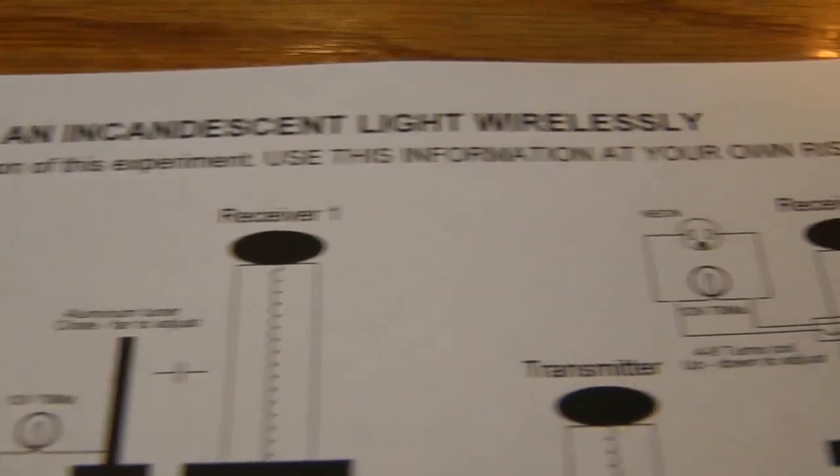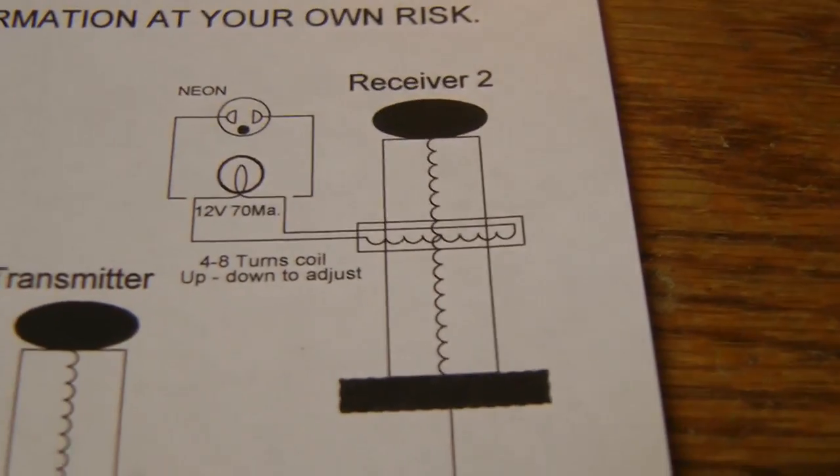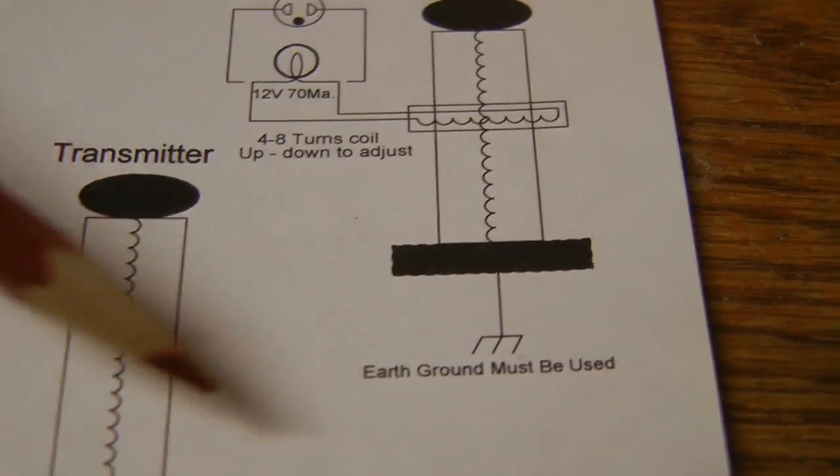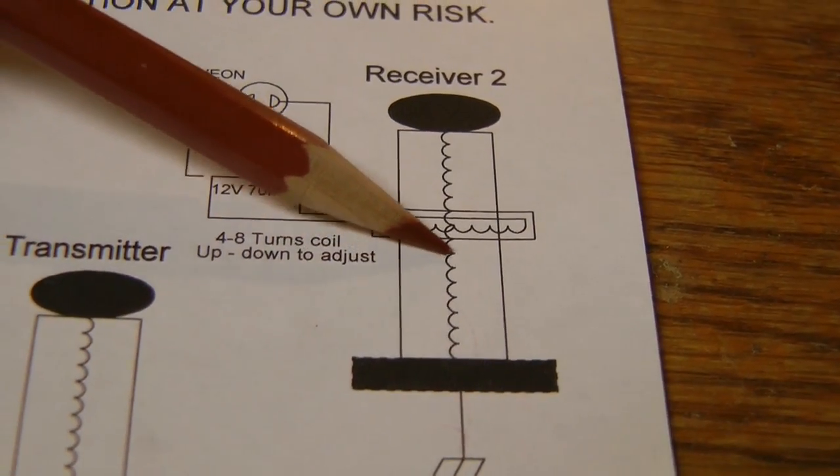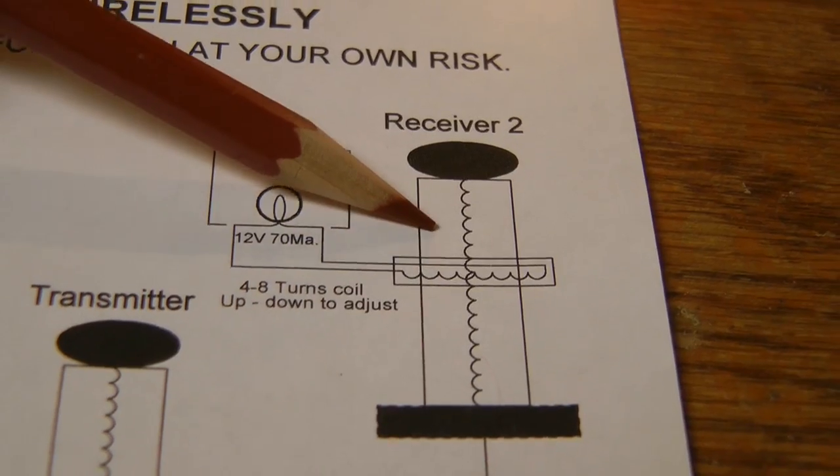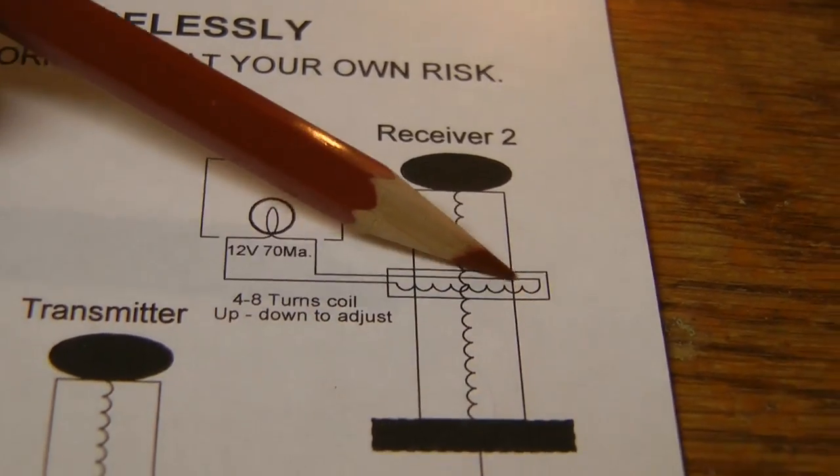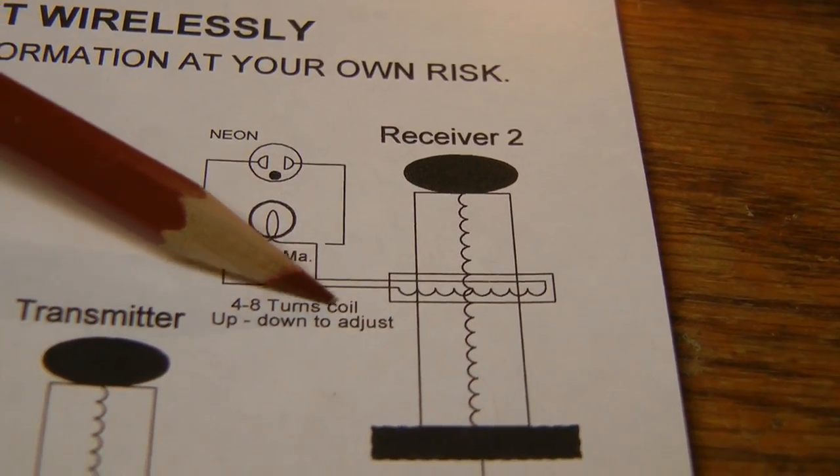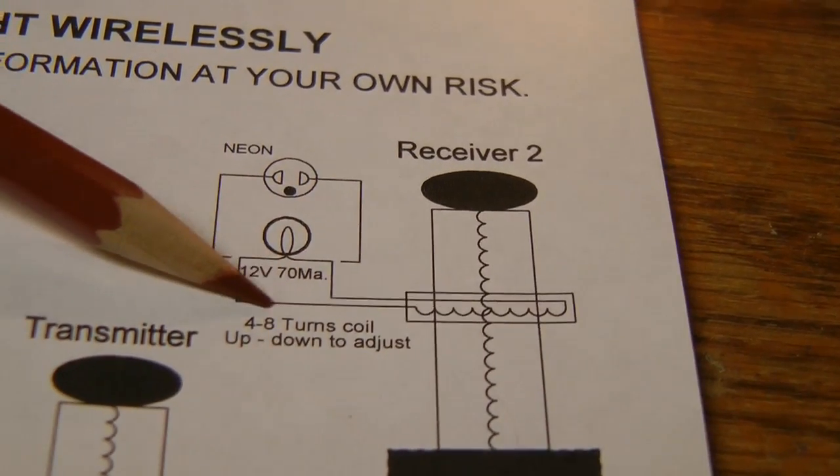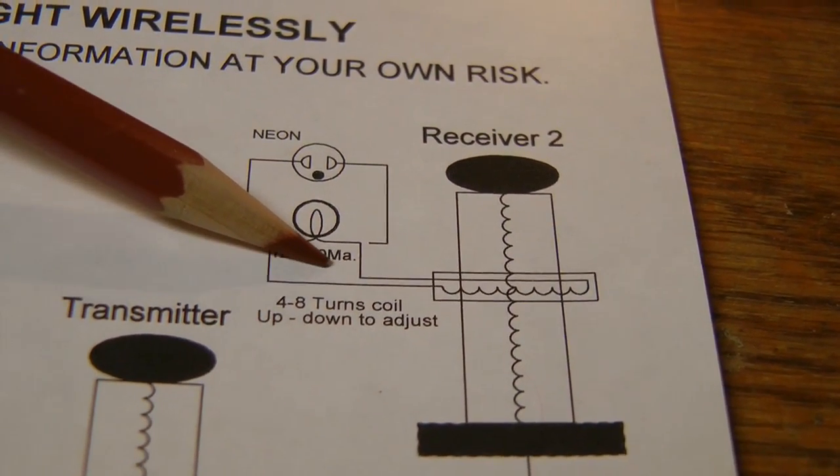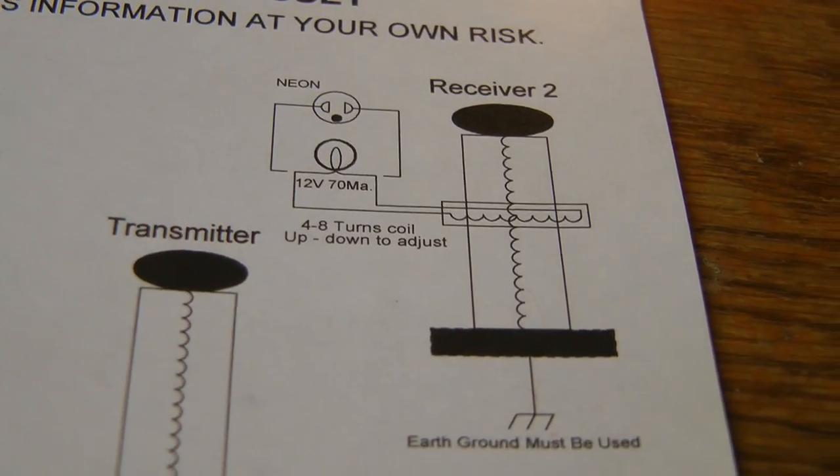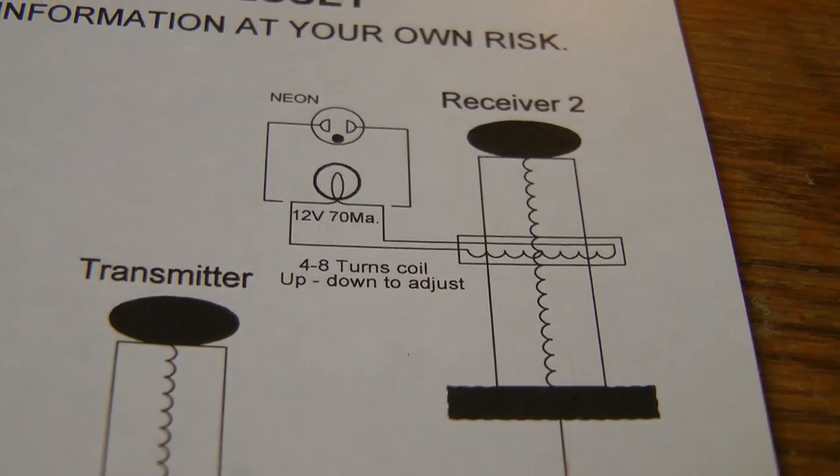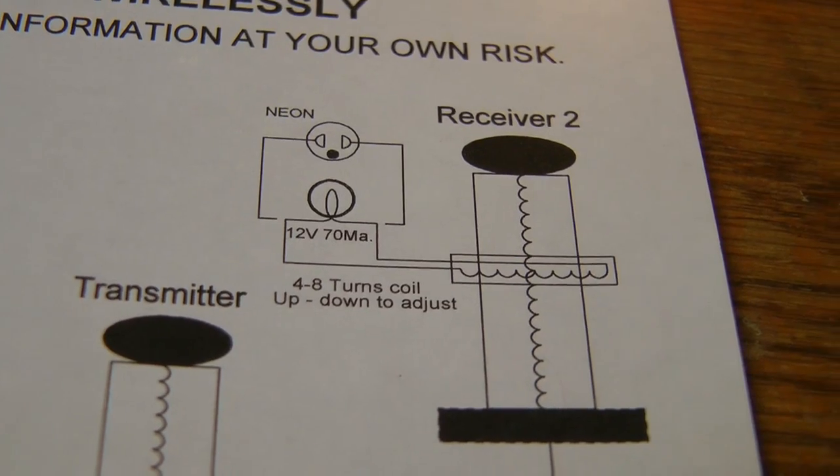Now on this one it's different. On this one I've got the bottom of the coil going right to the ground, and then I tune with about seven turns of wire around the receiver coil. Then the bulb is here instead of the other way around, and this works better I think, and there's a couple different things.